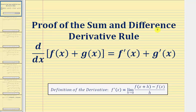Welcome to a proof of the sum and difference derivative rule. In this video we'll actually only show the proof of the sum derivative rule, but we can use the same type of proof for the difference derivative rule. We'll prove the derivative of f of x plus g of x with respect to x equals f prime of x plus g prime of x. We'll be using the definition of the derivative shown here below, where f prime of x equals the limit as h approaches zero of the difference quotient.